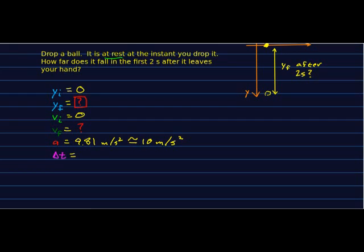Throughout the course, except in the lab, feel free to just use 10. And delta t we're given—we're looking for where this is two seconds after it leaves your hand. So now look at what we've got. We want to know delta y, and we know vi, and we know a, and we know delta t. So we need to find an equation that includes those four.